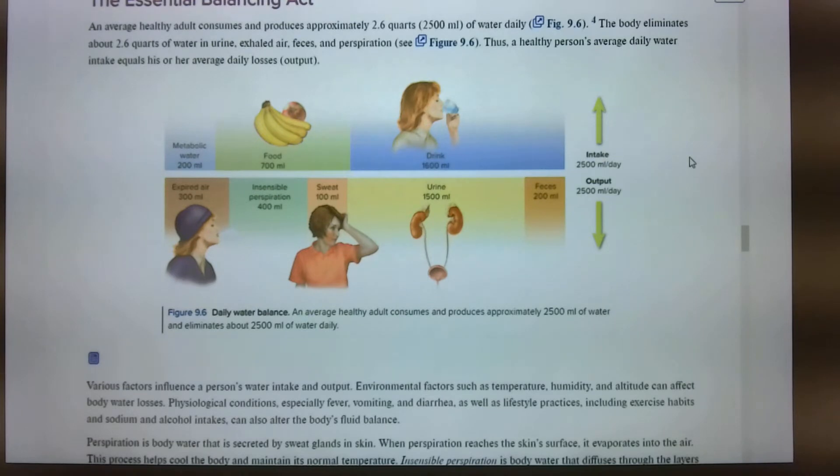So how do we balance this out? Metabolic water, food, drink. So what we intake, what we output. Every time we open our mouth and breathe, water comes out. Sweat, insensible perspiration, armpits and our feet. We go to the bathroom. Okay. Those are the outputs. How are we replacing those things? On average, healthy adult consumes approximately two and a half quarts of water daily. The body eliminates about two and a half quarts of water in urine, exhaled air, feces, perspiration. Thus, a healthy person's average water intake should equal the daily losses.